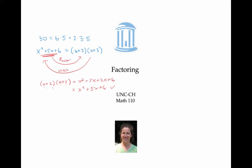A bit of terminology: when I think of an expression as a sum of a bunch of things, then the things I sum up are called the terms. But if I think of the same expression as a product of things, then the things that I multiply together are called factors.